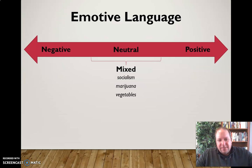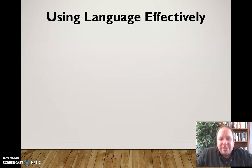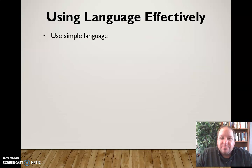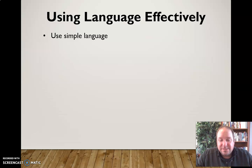So language evokes emotion, and we need to be careful when choosing language, understanding that it has the power to evoke these emotions. So what can we do to use language effectively, specifically as it relates to public speaking? Well, first of all, we can use simple language. The audience is just going to be hearing what we're saying — they won't have the written word in front of them to review. So we need to use language they can pick up on immediately, relate to immediately, and remember easily.